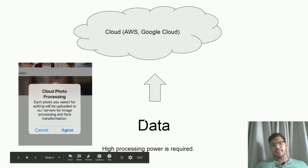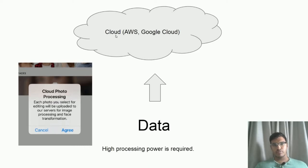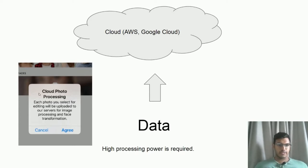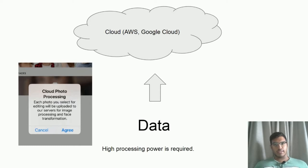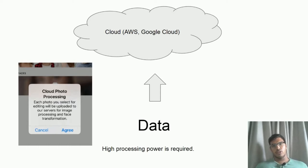But with FaceApp, the data on your phone — the photo you select — is uploaded to their servers, such as AWS (Amazon Web Services) or Google Cloud. As you can see in the screenshot, each photo you select for editing will be uploaded to their servers for image processing and face transformation. They explained that this is necessary because mobile phones generally cannot handle this level of high processing power.